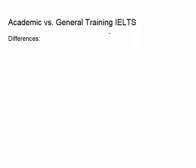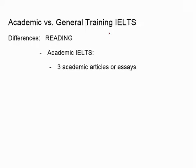Now let's talk about the differences between the two, starting with reading. On the academic IELTS, you will have three academic articles or essays that you need to read. These will be longer in length — full articles, full essays — and each will take you approximately 20 minutes to read and answer questions. Remember, you have one hour for the reading section, so each one is expected to take you 20 minutes.